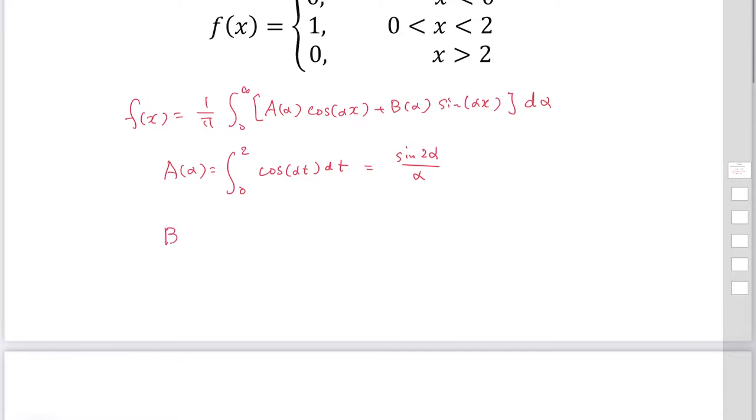b(alpha) is calculated as the integral from 0 to 2 of sin(alpha t) dt. Since f(x) equals 1 between 0 and 2, this becomes 1 over alpha times (1 minus cos(2 alpha)).